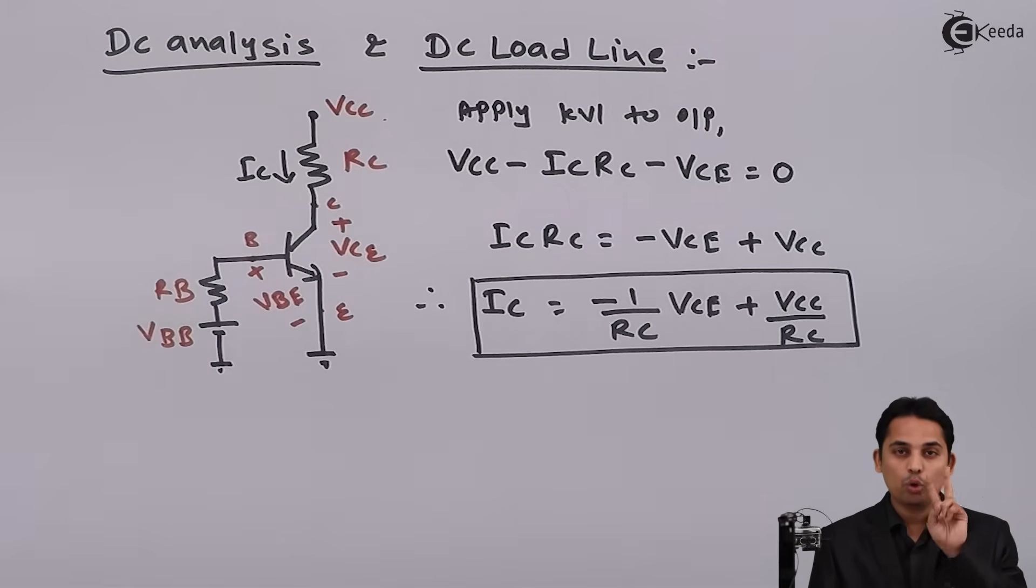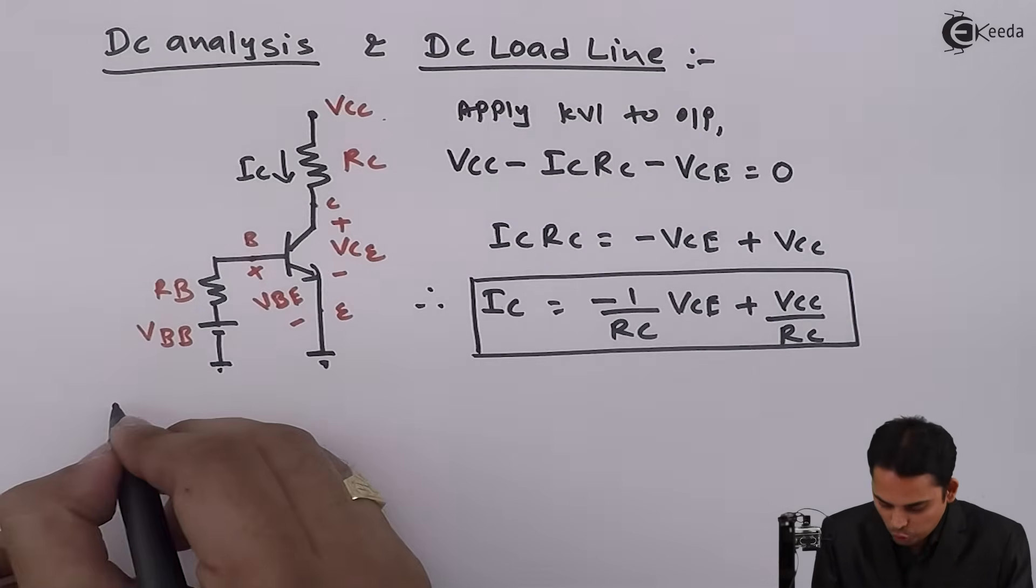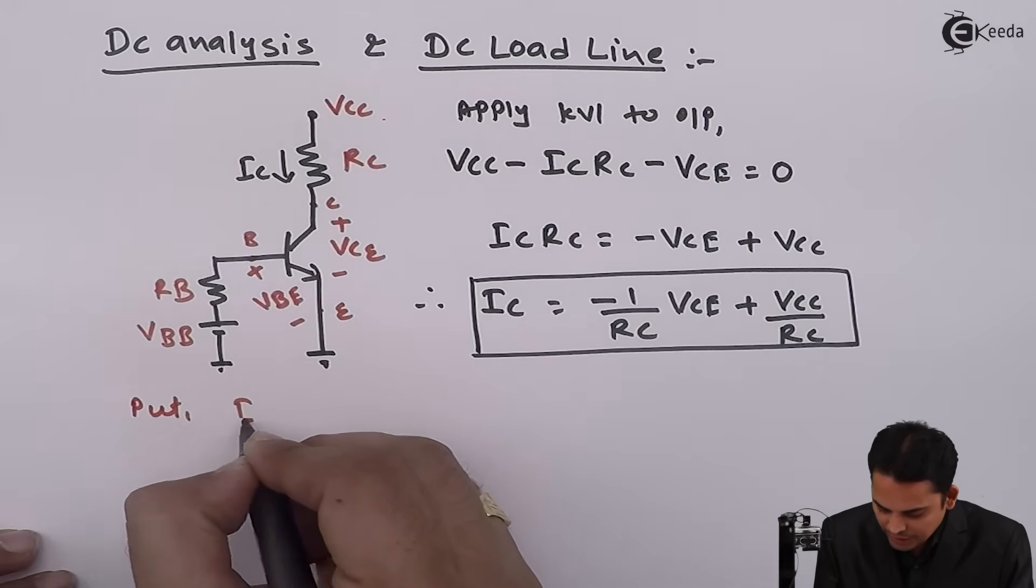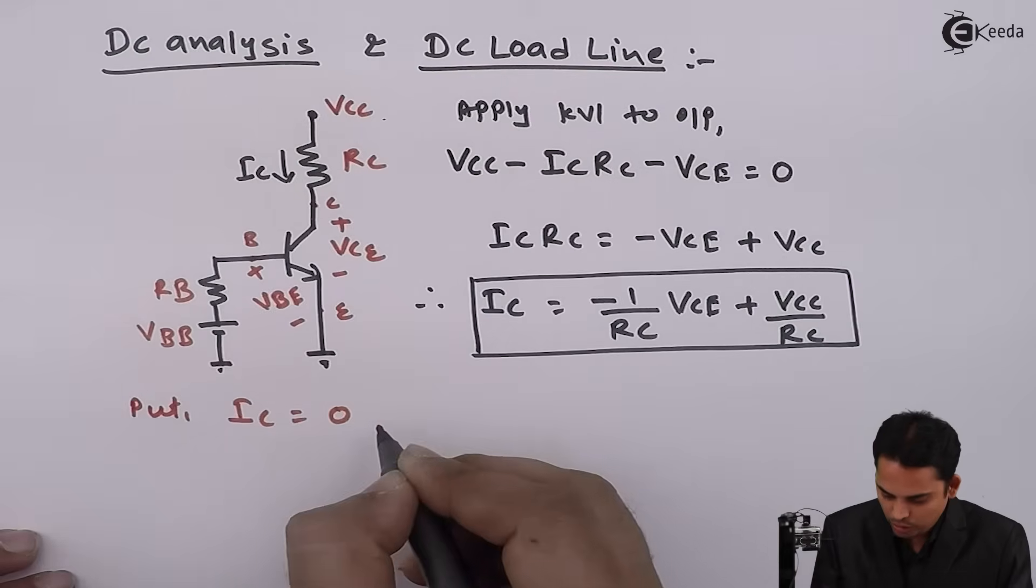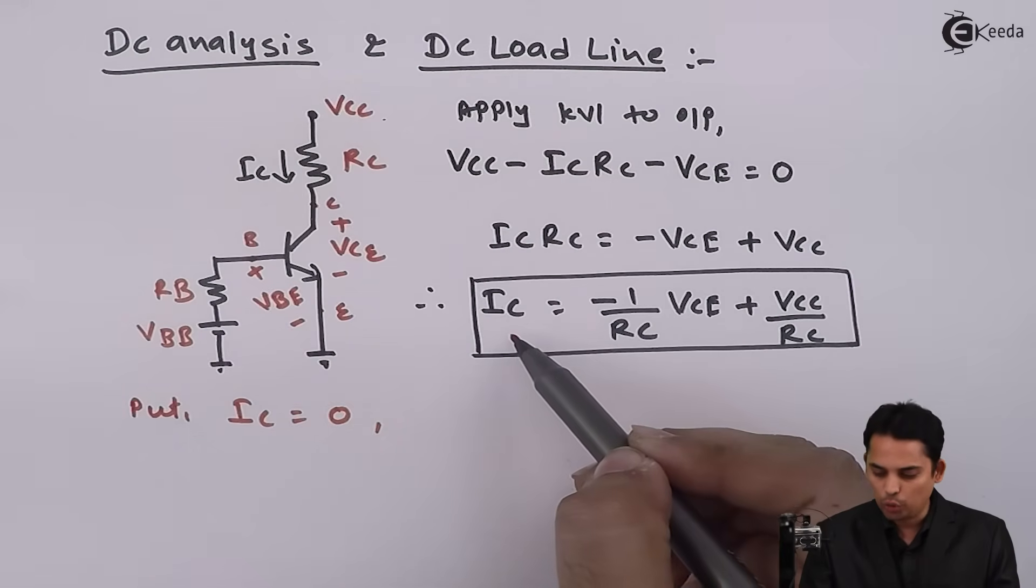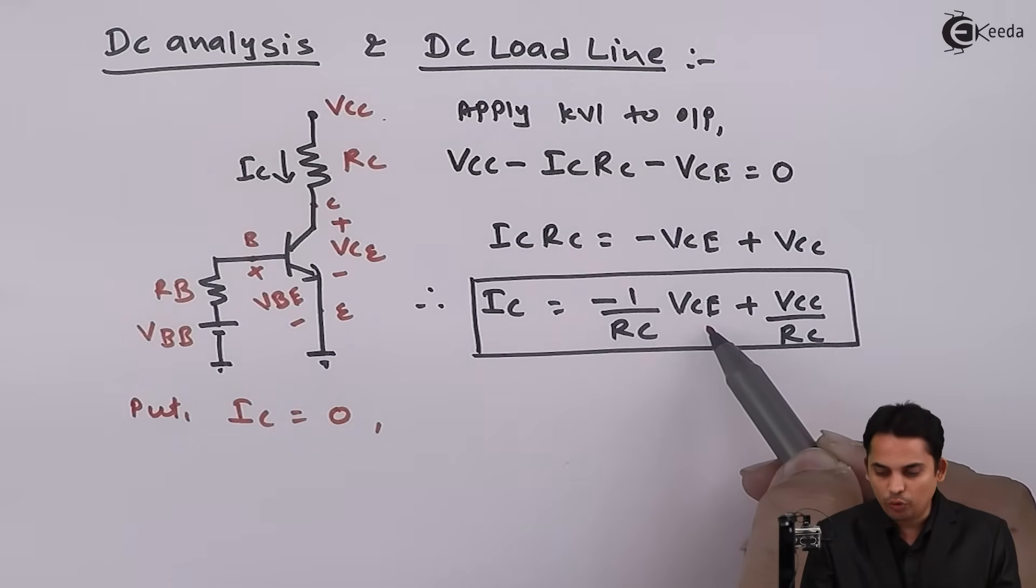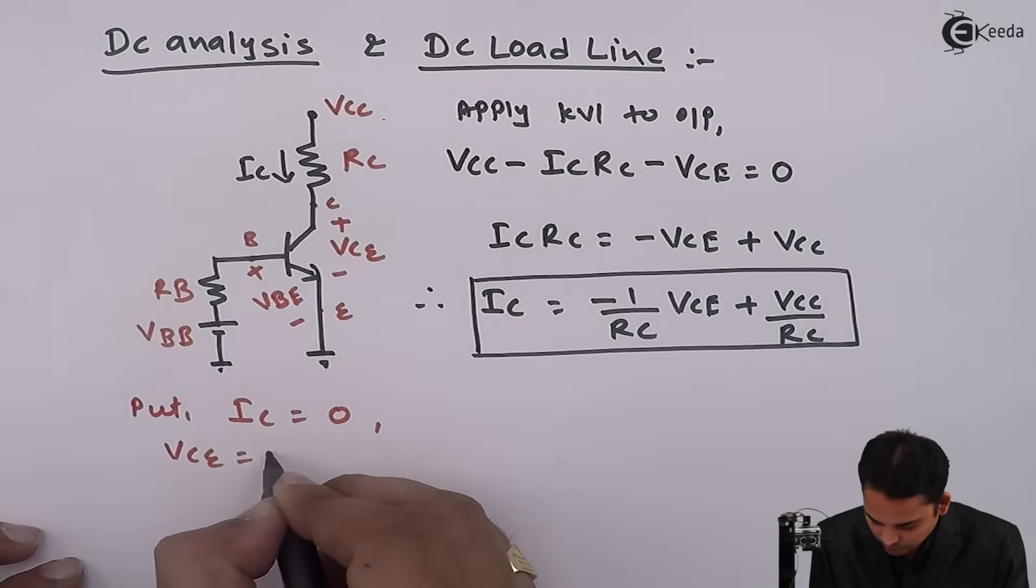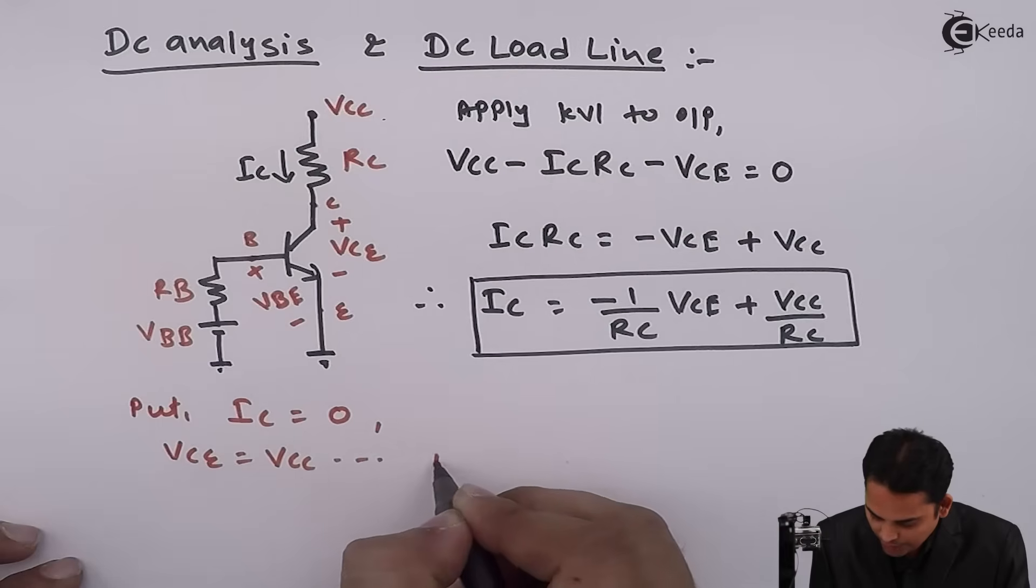Thus, we can have 2 points to draw a loadline. Case 1: put IC equal to 0. When IC is equal to 0, VCE becomes equal to VCC. This is point A.